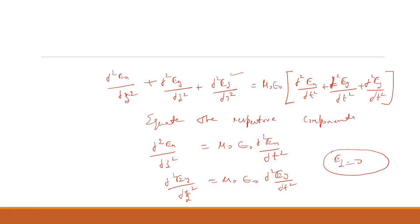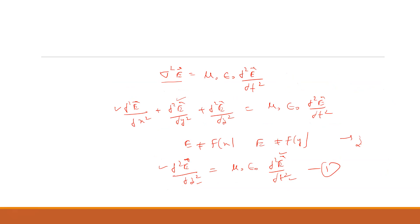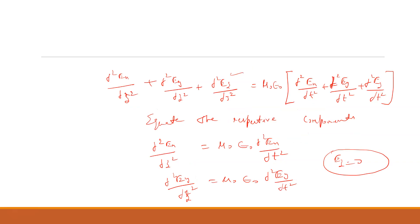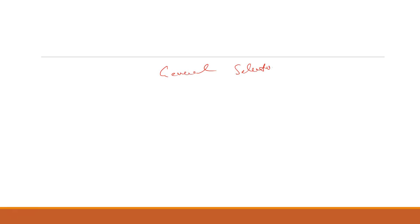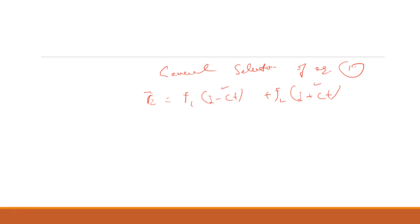The general solution of equation number one — which is the wave equation — is: E = f1(z − ct) + f2(z + ct), where f1 and f2 are functions of (z − ct) and (z + ct) respectively, and c is the speed of light, c = 1/√(μ₀ε₀). The first term is the forward wave solution and the second is the reflected wave solution.